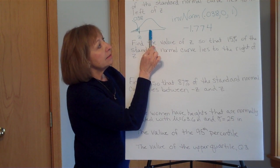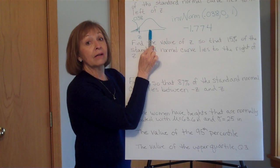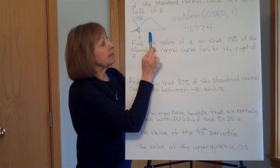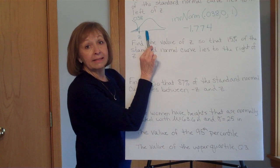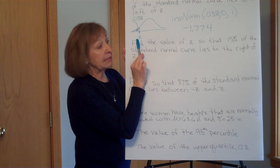That z-scores for data values that are left of the mean will be negative, z-scores for data values to the right of the mean will be positive. And so that I got the negative 1.774 for my z-score makes sense.